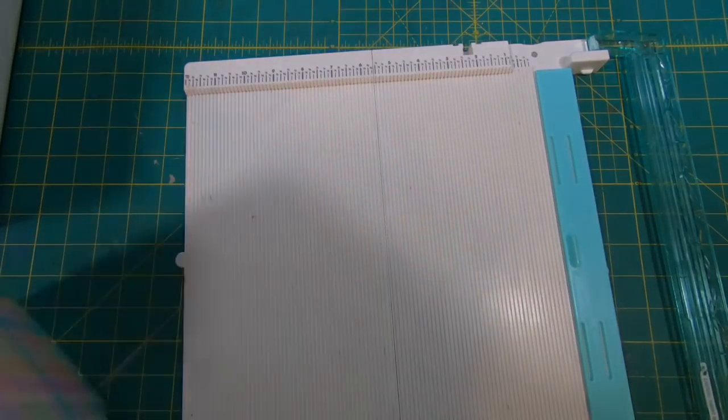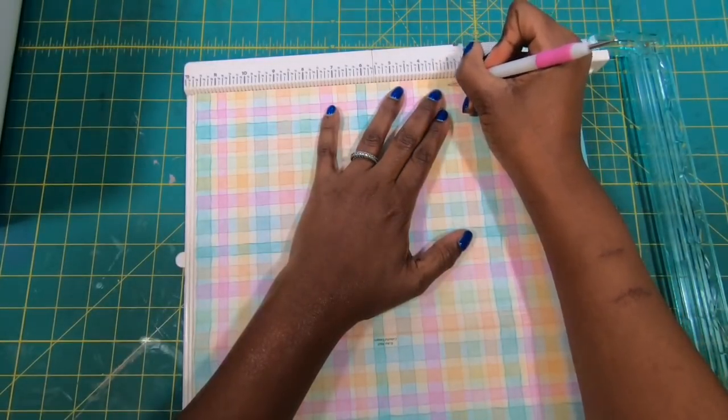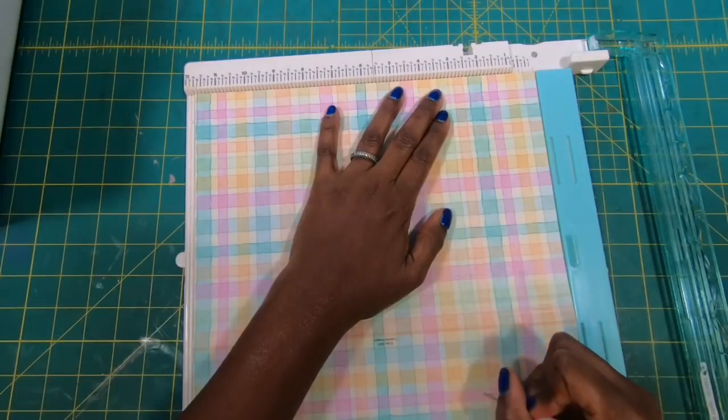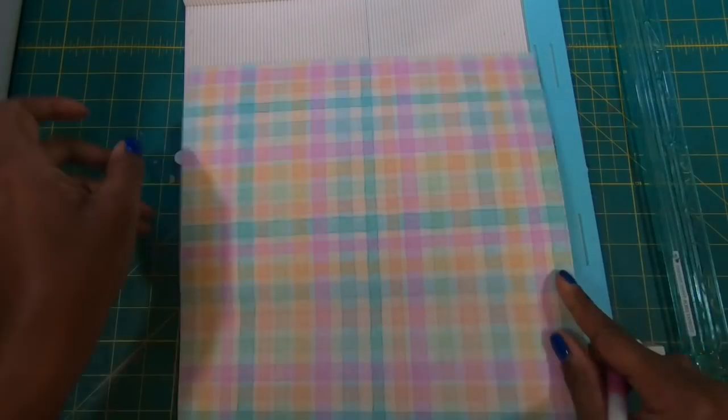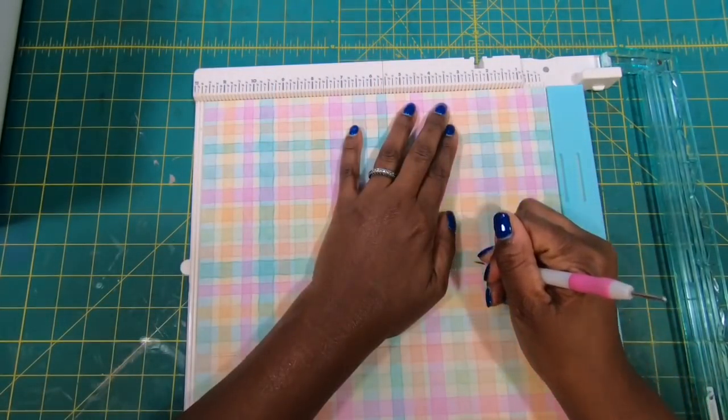So I'll flip it over and I'll go to the three mark on this side and I'm going to score down as far as I can. And then I'll just flip this. And again, I'll go back to my three mark and score.